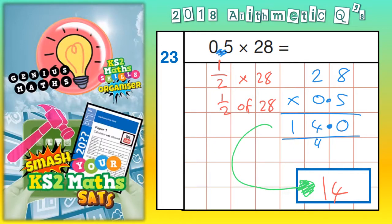So that would also work for 0.4 or 0.6 or 0.8. So let's say it was 0.7 times 28. We could just do, again, take out the decimal point and do 28 times 7.